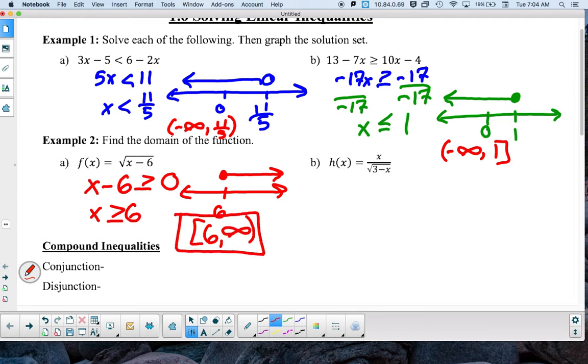So we can use our graphs to help us to see whether or not it's going to be a bracket or a parentheses. Now for B, because we have a square root and it's in the denominator, we kind of have two different restrictions on our domain.